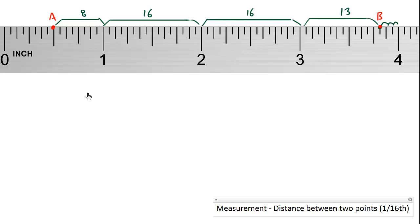So adding carefully, we have total number of teeth from A to B. What we have here is we have 8 plus 16 plus 16 plus 13, which equals 53 teeth in total.